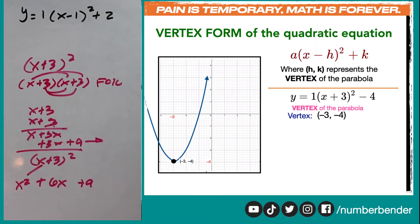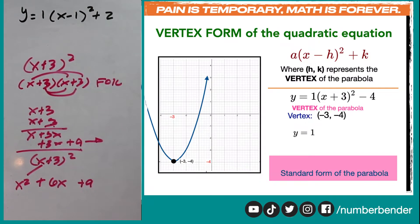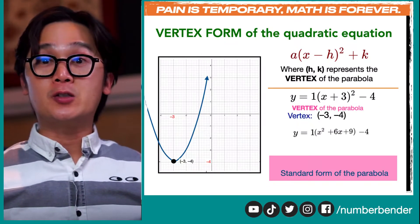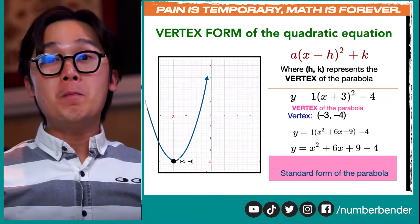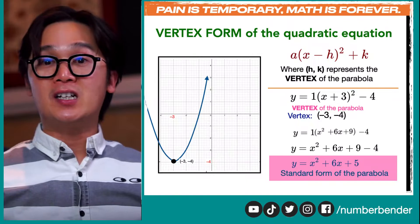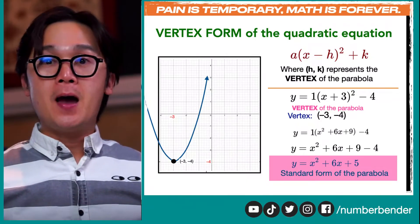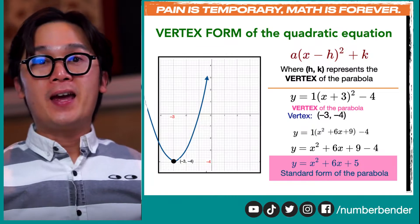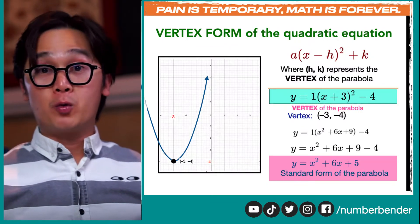In this particular example, the expanded form for x plus 3 squared gives us x squared plus 6x plus 9, which is the expanded form of our binomial raised to the second power, minus 4. Substituting a equals 1, it remains x squared plus 6x plus 9. Using the associative property, we combine 9 and negative 4, so the standard form of this parabola is x squared plus 6x plus 5. This is how we convert the vertex form into its standard form.